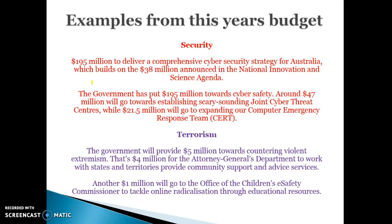On security, the government is going to spend $195 million to try and improve cyber security. $47 million will go towards deterring people from committing fraud and other types of cyber problems by setting up dedicated organisations. $21.5 million will go towards expanding the computer emergency response team to try and help people that have been involved in any form of cyber crime.